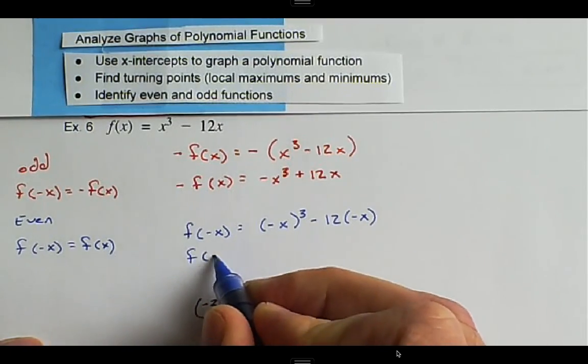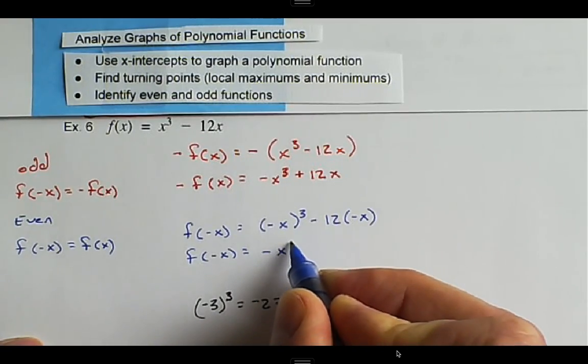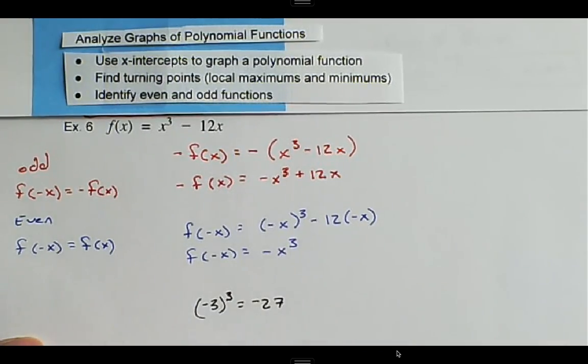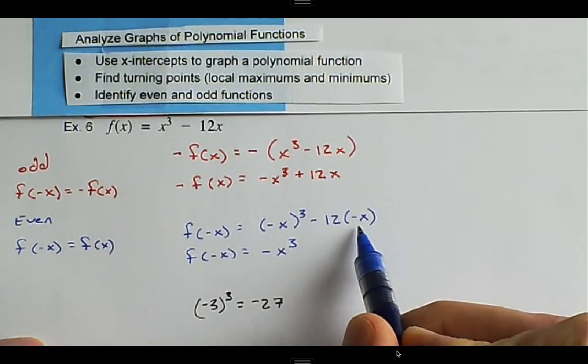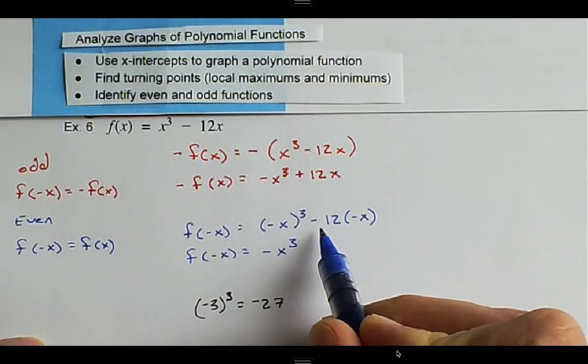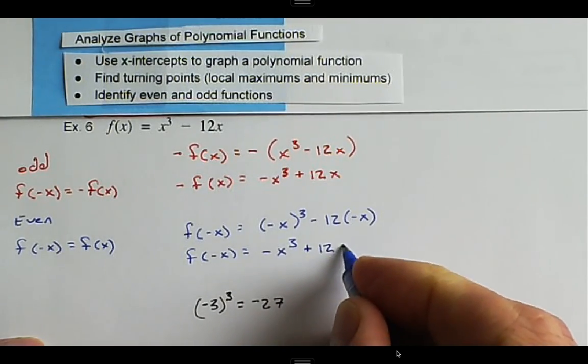So the function evaluated at -x, we're going to keep the lead negative for the coefficient, and that just becomes -x³. Then we come to our next term, we have -12 multiplied by -x, and we have that that is a negative multiplied by negative, so that becomes +12x.